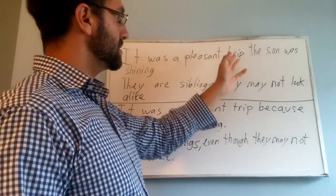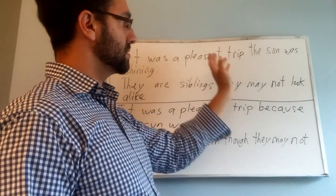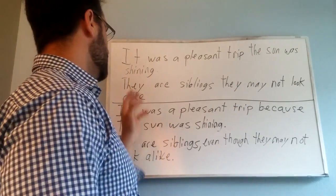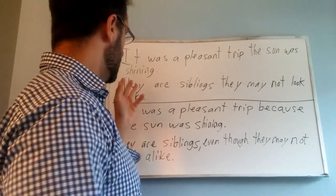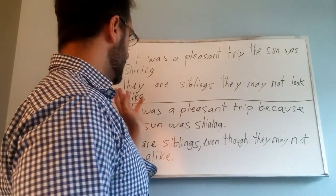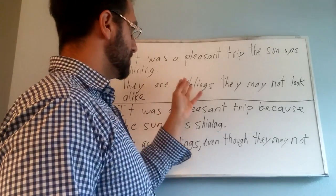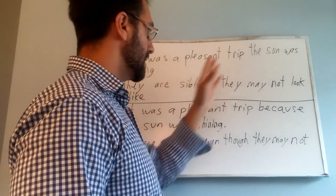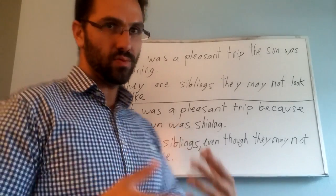So, it was a pleasant trip — we need something here to segue to 'the sun was shining.' In the second sentence we have here, their siblings, they may not look alike. We need something to segue between 'their siblings' and 'they may not look alike.'